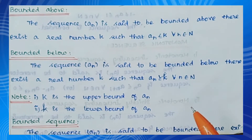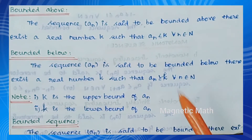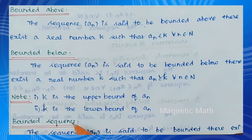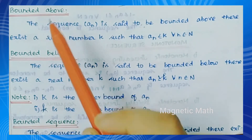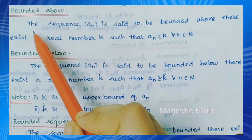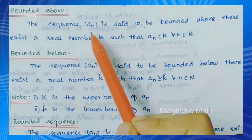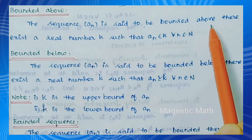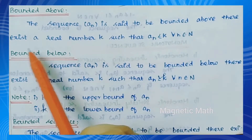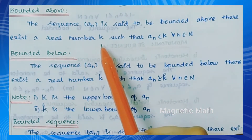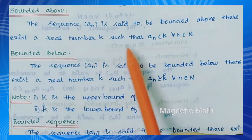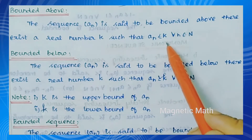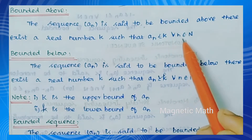Hello everyone. So now we have bounded above, bounded below, bounded sequence — the definitions. So let's talk about that. The first definition is bounded above. The sequence aₙ is said to be bounded above if there exists a real number K such that aₙ is less than or equal to K for all n belonging to ℕ.